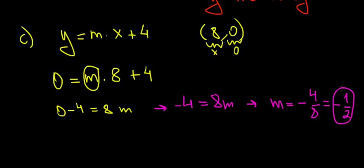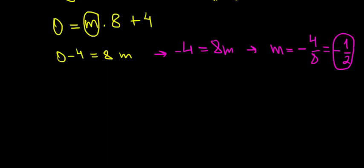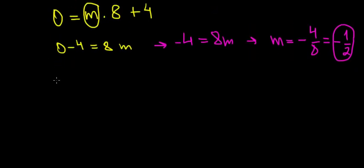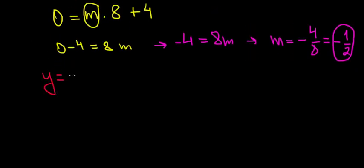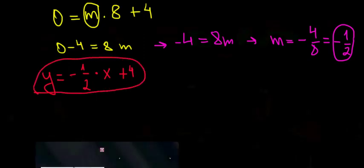So our slope is minus 1 over 2. Now we can write the general formula: y equals minus 1 over 2 times x plus 4. That's the final answer for part C, and that's it for this video.